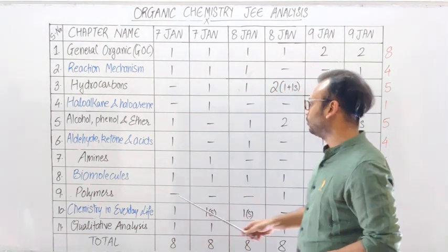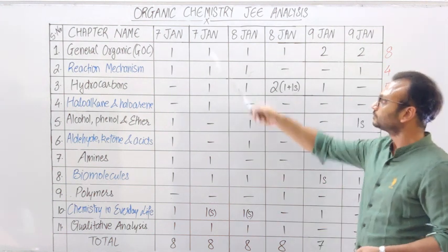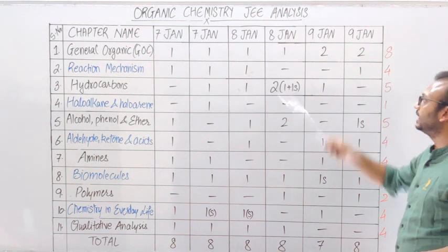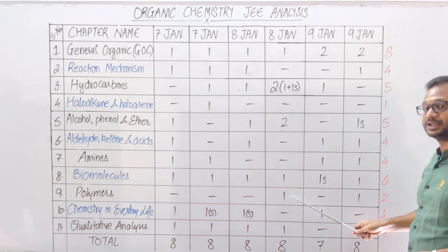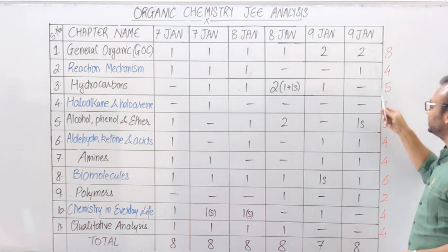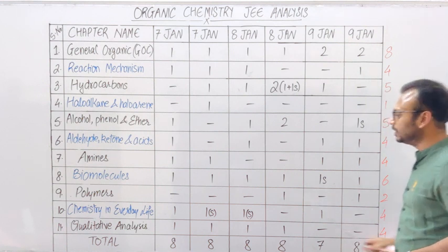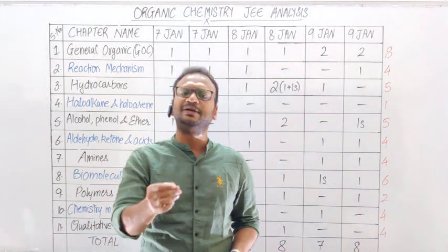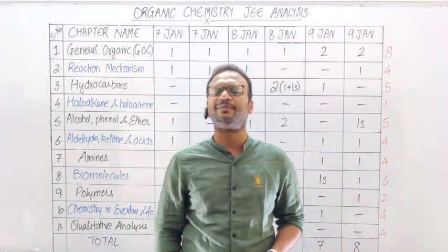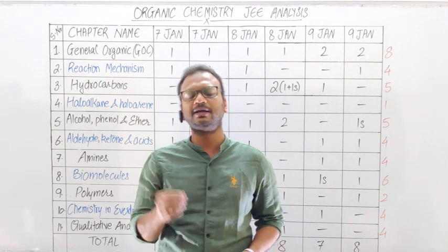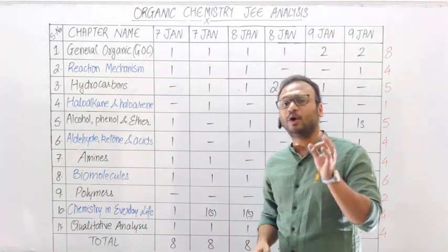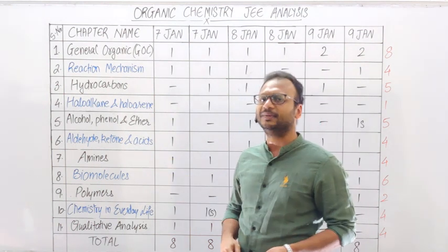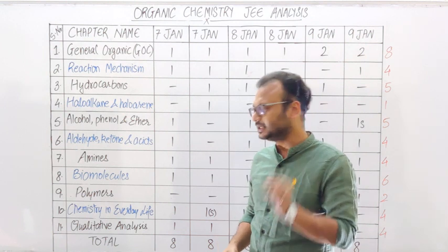Polymer की बात करें तो 7th January Morning और Evening में कोई question नहीं आया। किसी-किसी set के अंदर ही polymer में से question आएगा, normally polymer में से question नहीं आएगा, कभी-कभी आ भी सकता है। यानि ये chapter बहुत ज़्यादा important नहीं है — जैसा Haloalkanes, वैसा ही Polymer है। इसकी weightage कोई खास नहीं है।